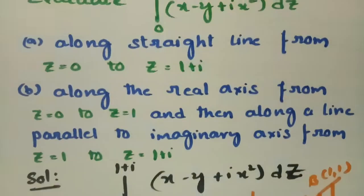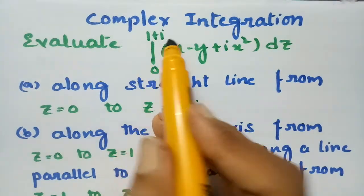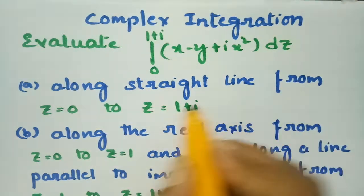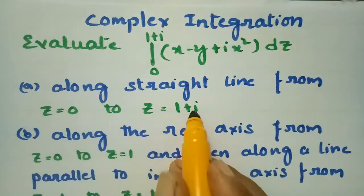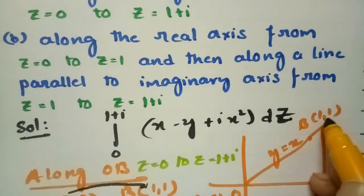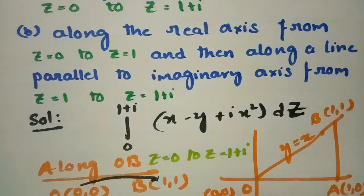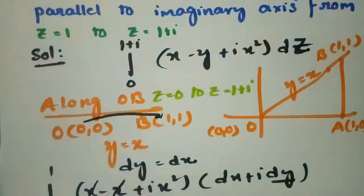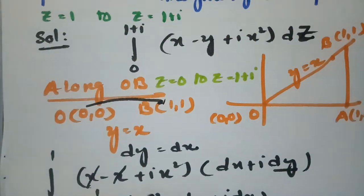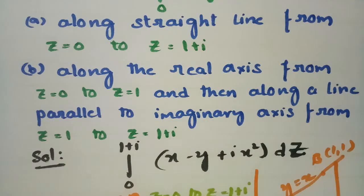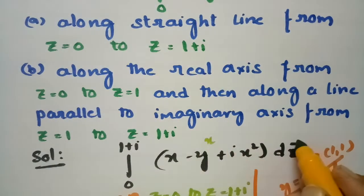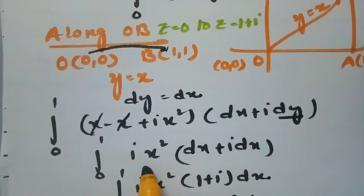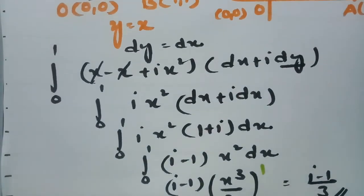Therefore, the integral of (x - y + i·x²) dz along the straight line from z=0 to z=1+i — where 1+i corresponds to (1,1) in the xy-plane along the line y=x — equals (i-1)/3. Now we move to the second part, along the real axis.